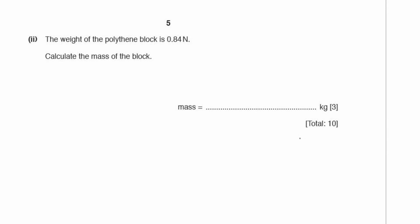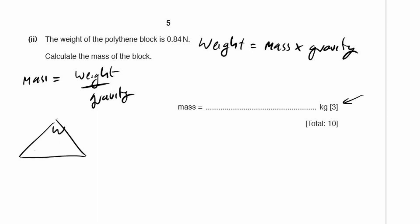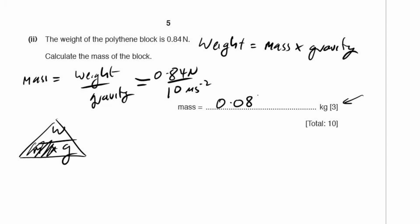The weight of the polythene block is 0.84 newtons. Calculate the mass of the block. We need our equation for weight — it's a three-mark question, so there's guaranteed to be one mark for writing down the equation. The mass is given by weight divided by gravity. Putting the information in: 0.84 newtons divided by 10 metres per second squared gives us a value of 0.084 kilograms.